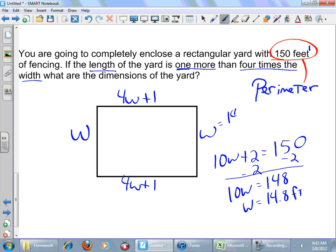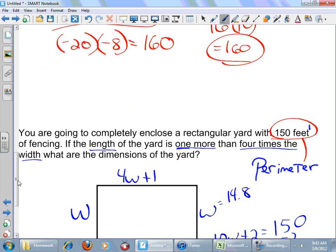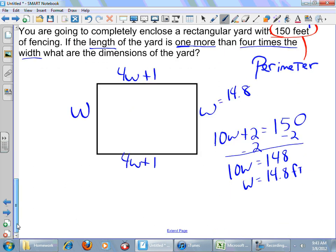So that equals 14 and 8 tenths. Now, if you want to convert that to inches, you would need 80% of 12. Right? So if I did 12 times 0.8, I'll get 9 and 6 tenths inches. Okay. But we can go ahead with the decimal here. That's fine. All right.